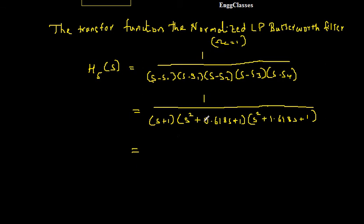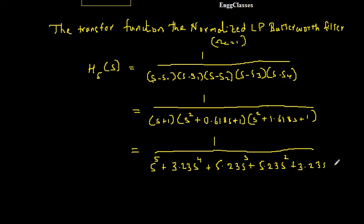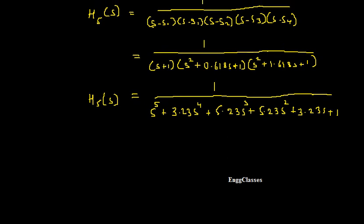This is the transfer function in factored form. We need to multiply all the terms to get the expanded polynomial form in powers of S. After multiplying, we get: S⁵ + 3.23S⁴ + 5.23S³ + 5.23S² + 3.23S + 1. You should remember either the Butterworth polynomial in factored form or this expanded form.